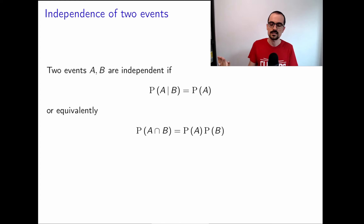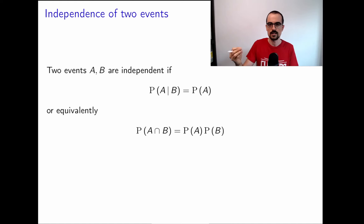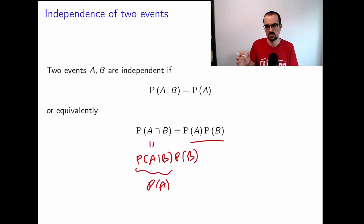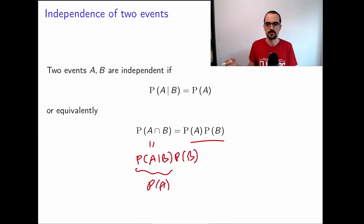Equivalently, A and B are independent if the probability of the intersection equals the product of their individual probabilities. This follows from the chain rule: P(A∩B) = P(A|B)·P(B), and if P(A|B) = P(A), then we get this equality. We usually use this product definition, but both are equivalent.